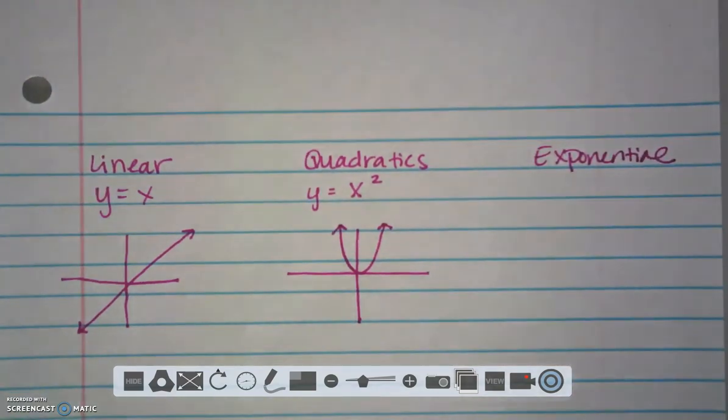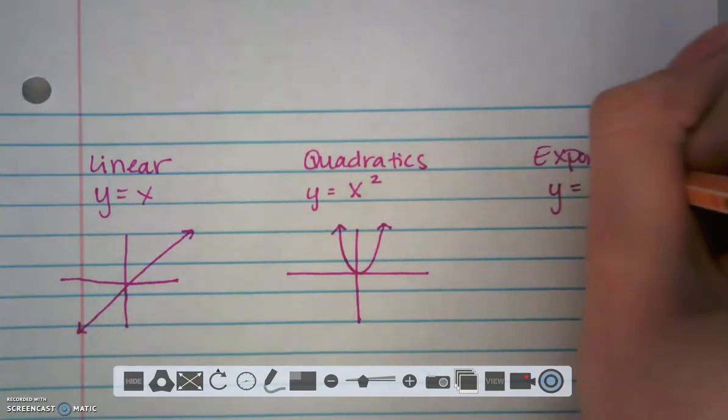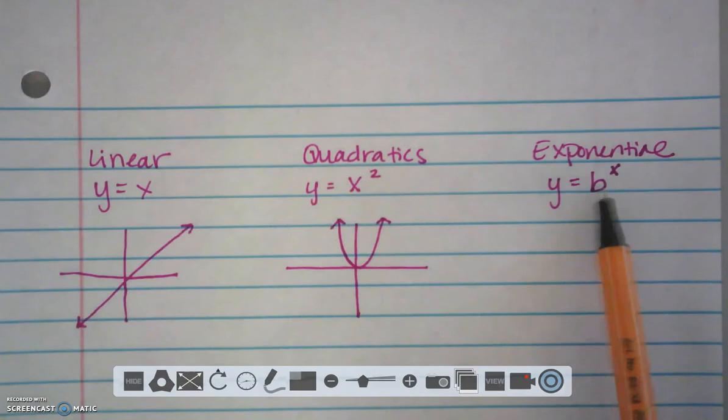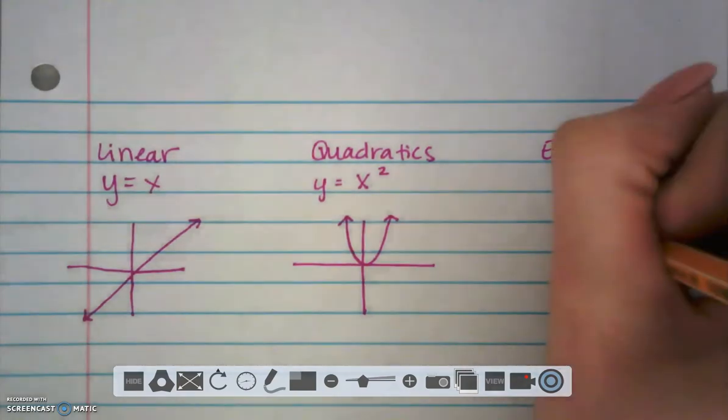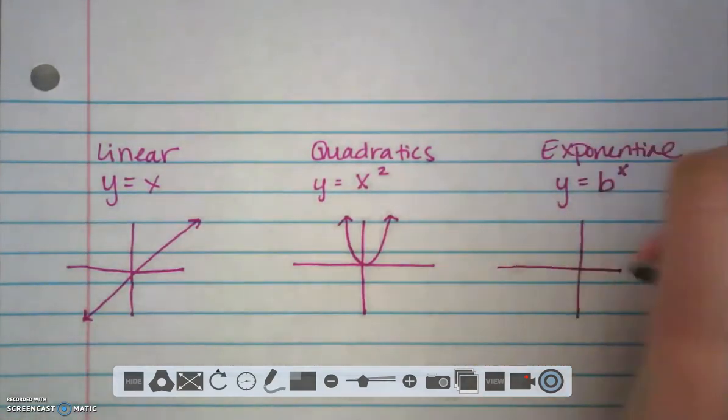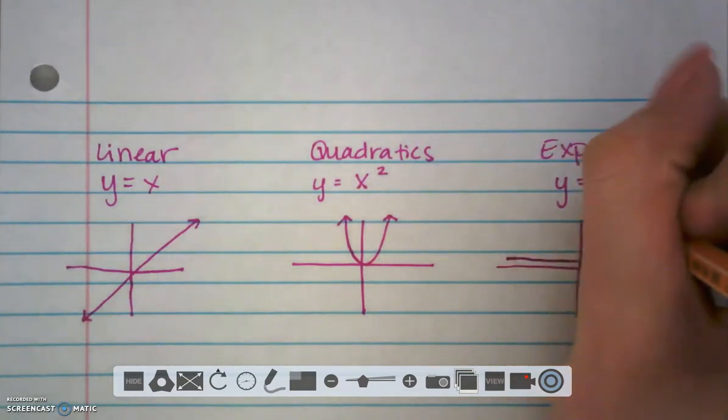Exponential functions are unique because it has several parent functions. It's going to depend on the base that we have on what our graph will look like. But this is the general outline to look for the parent function of an exponential.